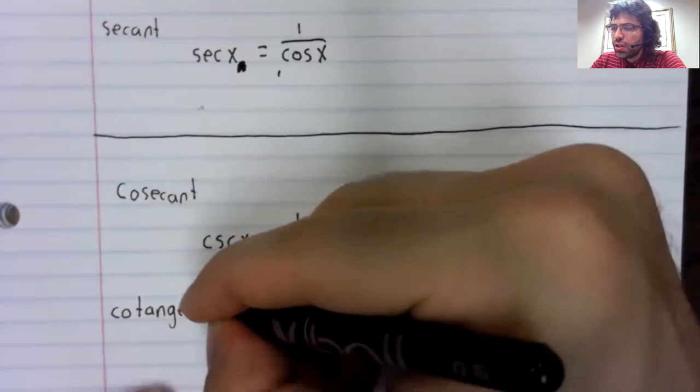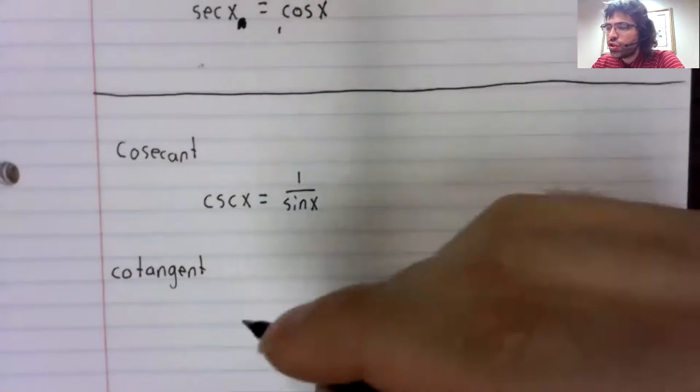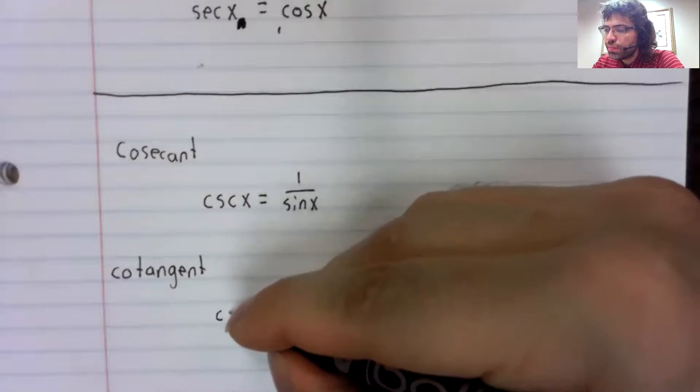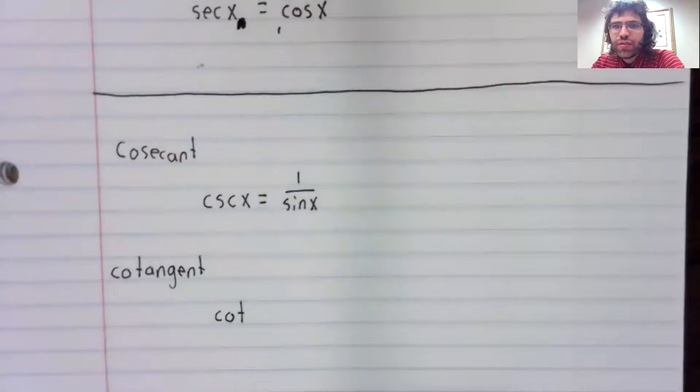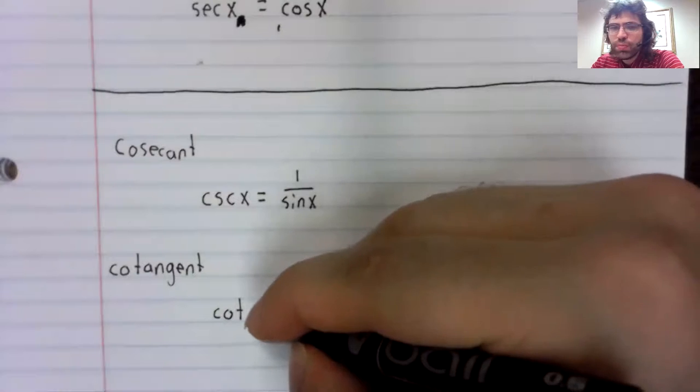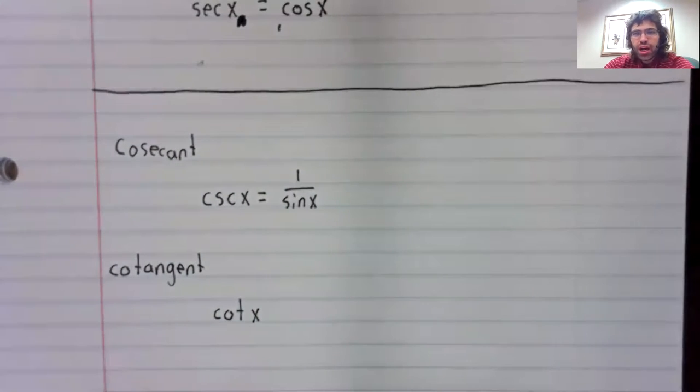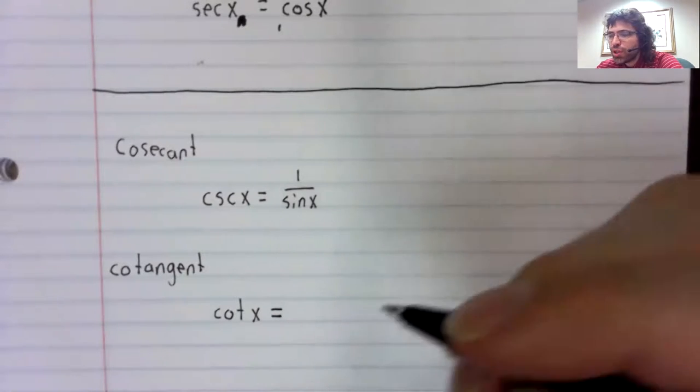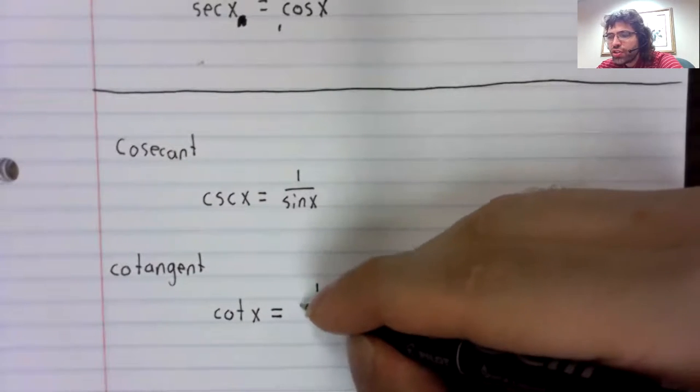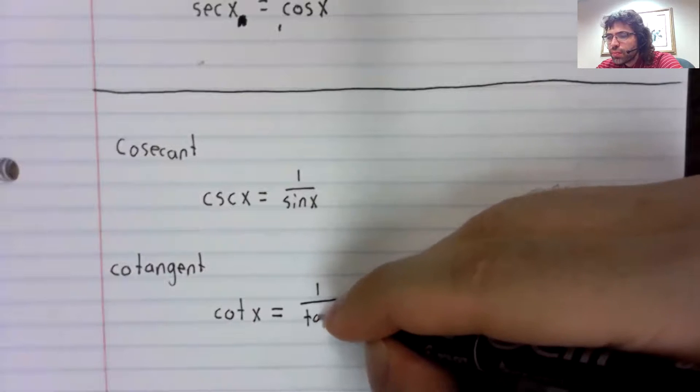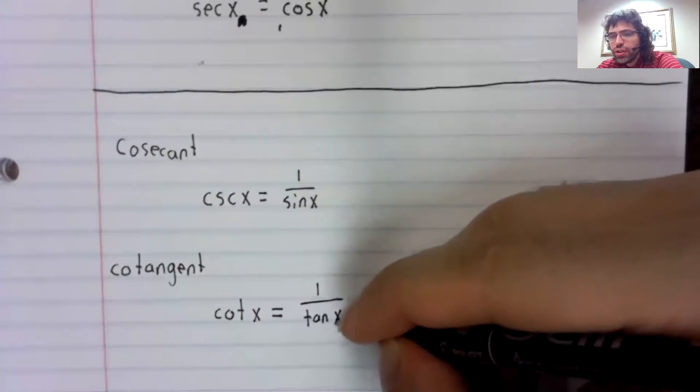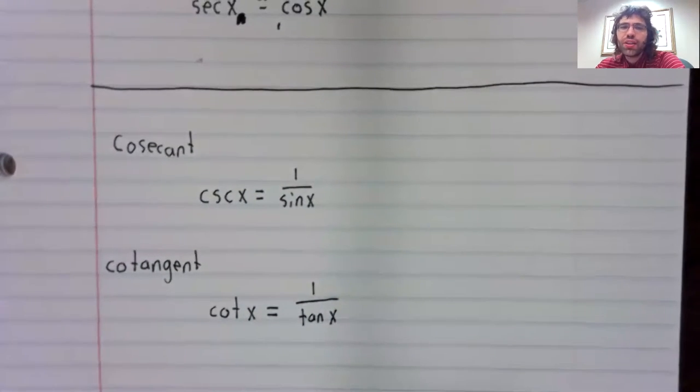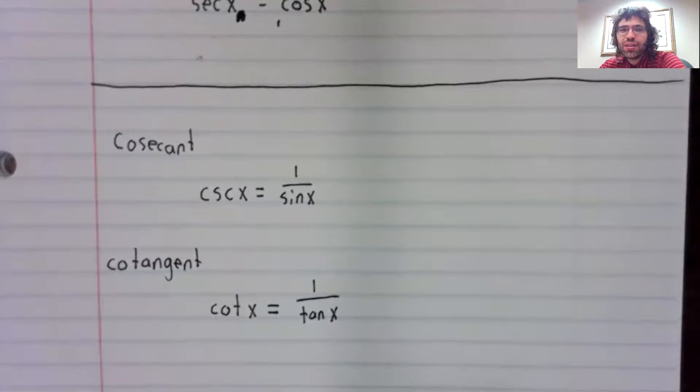Finally, the cotangent. And the way these functions are named is probably going to seem very arbitrary. There is method to this madness, but the cotangent is one divided by the tangent, and it is the only co-function that is defined this way.